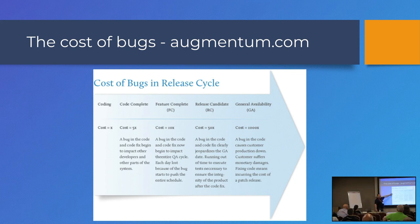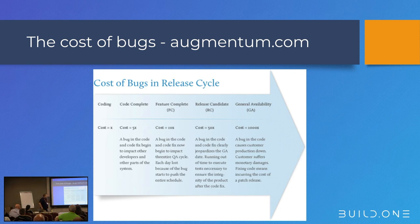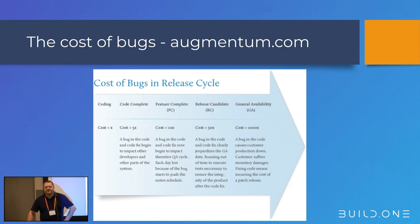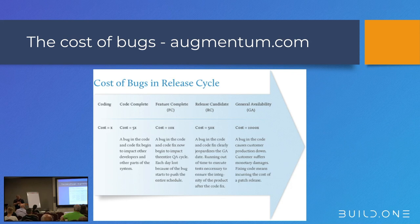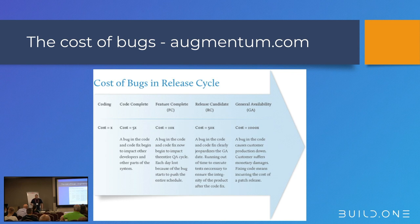From Code Complete: coding is X. If we find a bug while we're coding, it's a factor of one. After developers start looking at it, it's five. Feature complete is 10 because it's affecting the entire QA cycle. If it's in a release candidate, it's 50. And if it's in general availability or release, it's 1,000 times more expensive. That hurts the bottom line. If a developer fixes the bug while he's working on it, it's just him. If it's gone out to GA, it's your customer, the users of your customer, customer service, the release manager, the project manager — and you can imagine all those people spending even 10 or 20 minutes on that. It's huge.